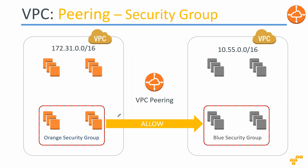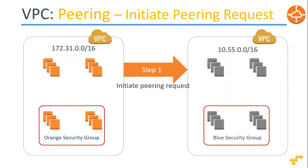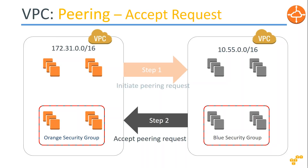Next, you create a request from one VPC — for example, allow traffic from this orange security group or subnet to the blue security group. You initiate the request, which can go to your own VPC in your account or to a partner's VPC. You just need the account number and VPC ID. Once sent, the request must be approved. If not approved within seven days, it automatically expires and a new request must be created.